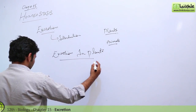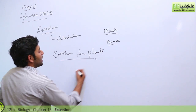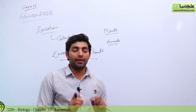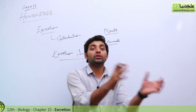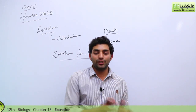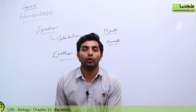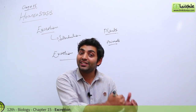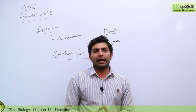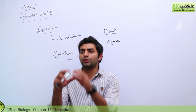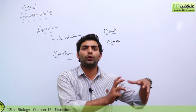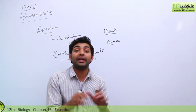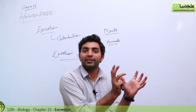What is excretion in plants? Ladies and gentlemen, if we talk about excretion in plants, there are different ways things work. For example, we have yellow leaves. The yellowing of leaves is also a form of excretion. When chlorophyll or chloroplasts in the plant are destroyed, the color becomes yellowish — this is part of the plant's excretory process.